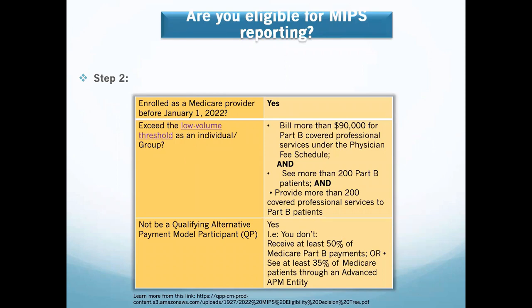Next, check the following: first, see if you were enrolled as a Medicare provider before January 1 of 2022. If yes, ask yourself if you exceed the low volume threshold, either as an individual or as a group. The low volume threshold means you bill more than $90,000 for Part B covered professional services, you see more than 200 Part B patients, and you provide more than 200 covered professional services to Part B patients. All three criteria must be met.